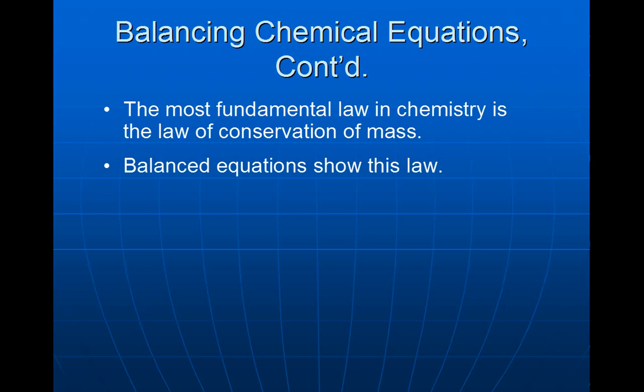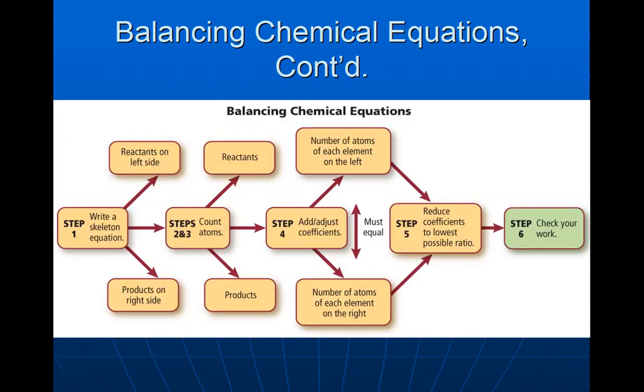Balanced equations show and follow the law of conservation of mass. Here is an outline of the steps: first, write a skeleton equation with reactants on the left and products on the right. Steps 2 and 3, count the atoms of the reactants and products. Step 4, add or adjust the coefficients so the number of atoms of each element on the right equals those on the left — that's the key to the entire process. Step 5, reduce coefficients to the lowest possible whole number ratio. Finally, check your work to make sure the law of conservation of mass is satisfied and all atoms are balanced.